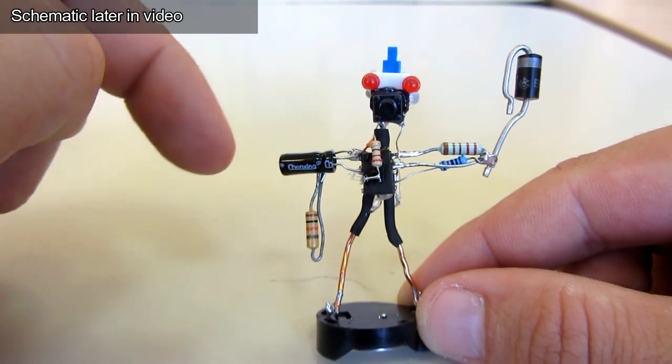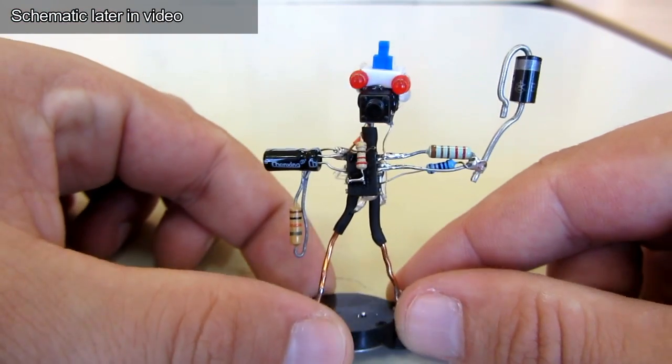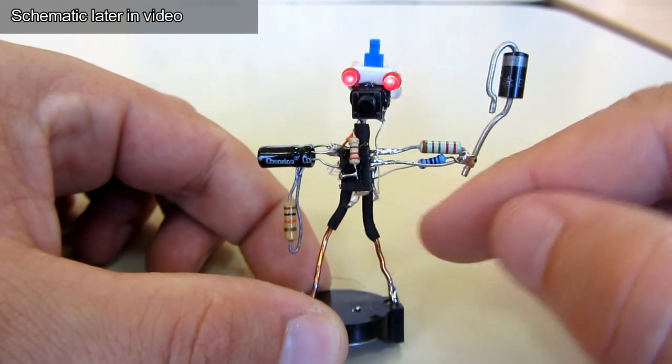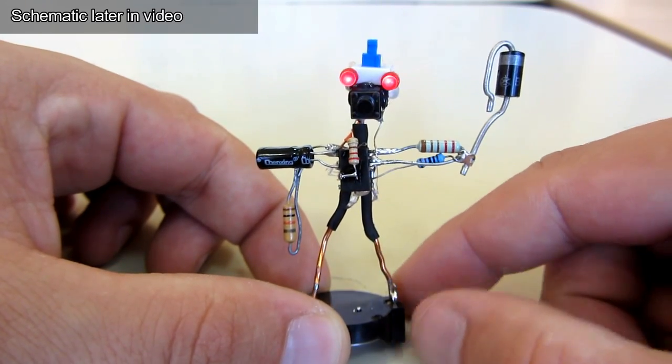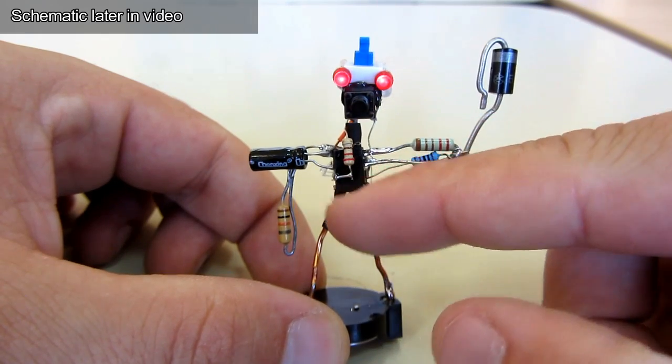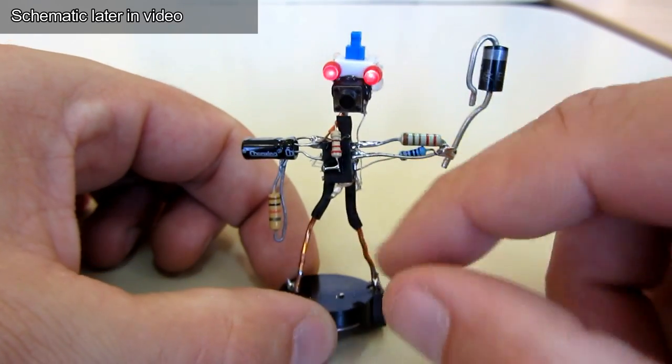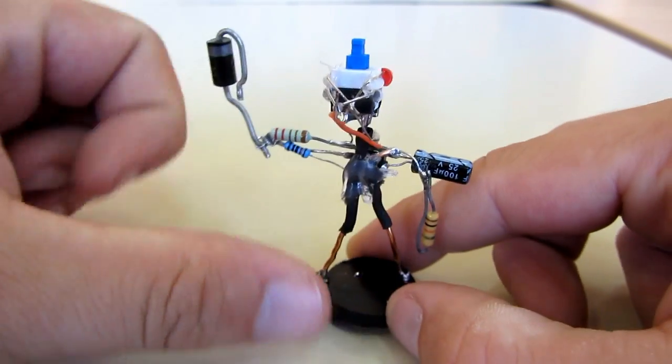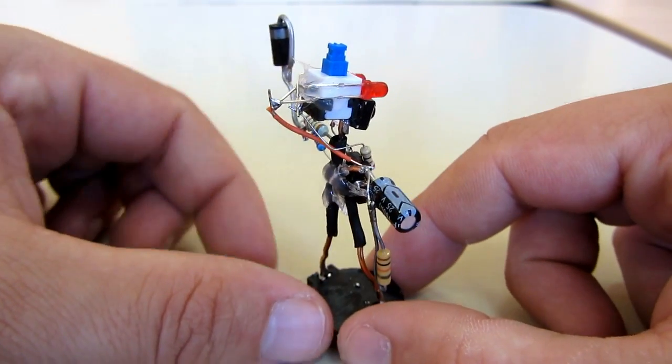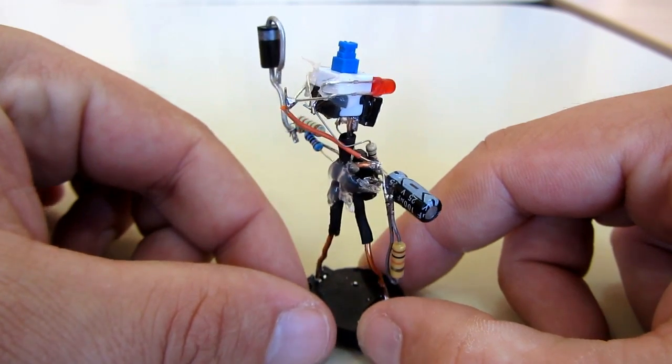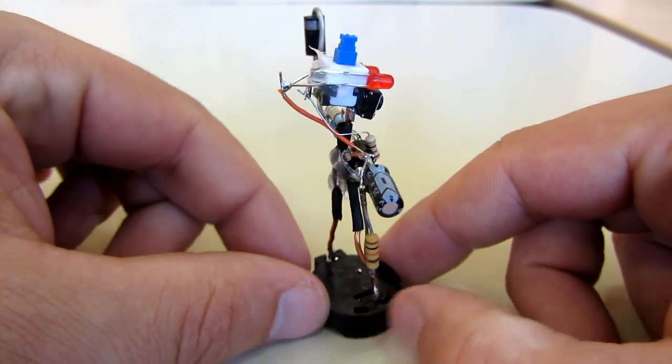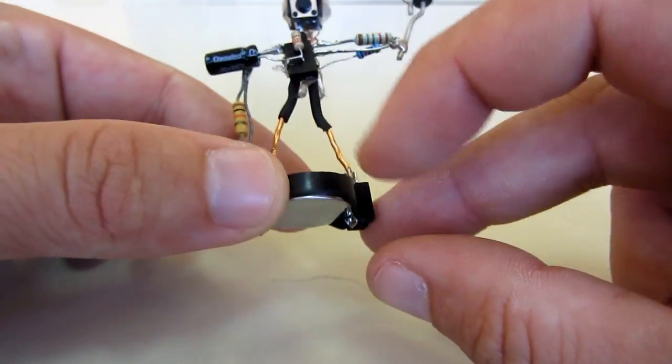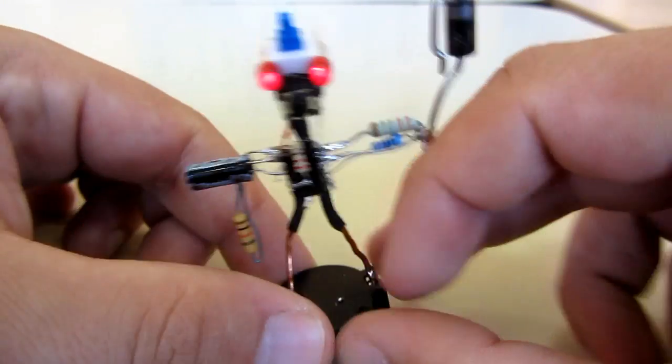The body of the robot is, of course, a 555 timer. The head is a switch with two LEDs. The left shoulder is a capacitor, and two resistors are the right shoulder. The circuit is powered with a 3-volt coin battery.